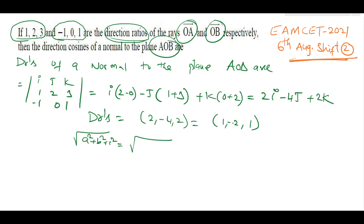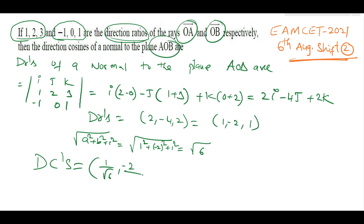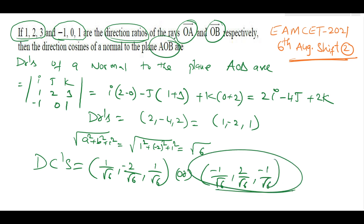With a=1, b=−2, c=1: √(1+4+1) = √6. Therefore direction cosines = (1/√6, −2/√6, 1/√6). Alternatively, multiplying by −1: (−1/√6, 2/√6, −1/√6). These are the required direction cosines of the normal to plane AOB.